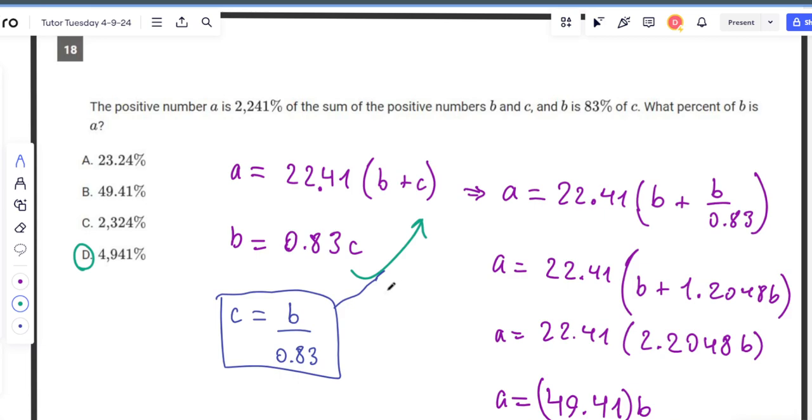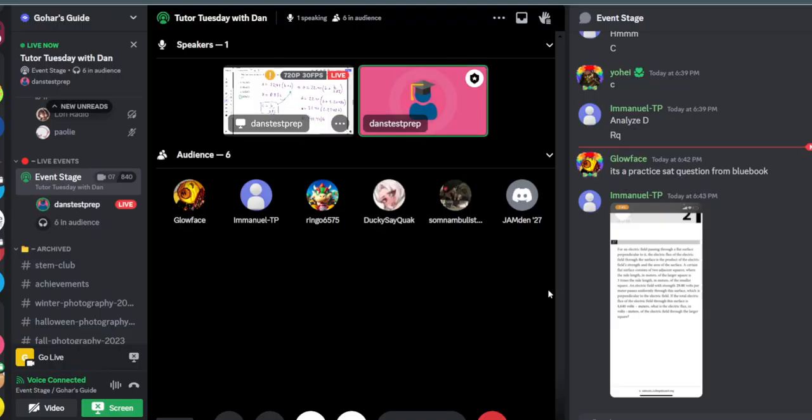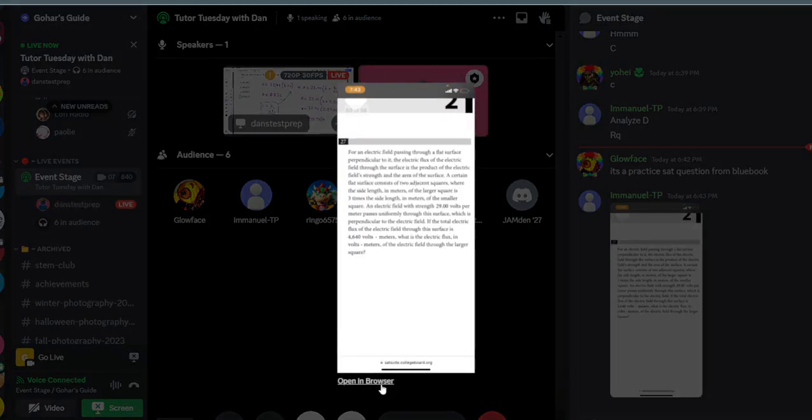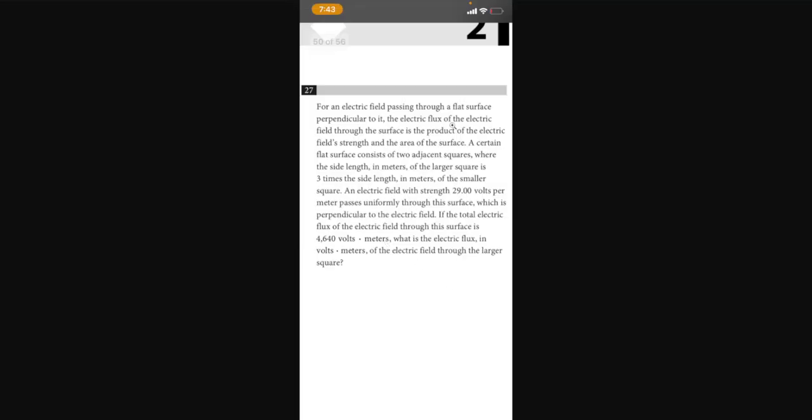So what percent of B is A? That's saying A is what percent of B? And A is 49.41 times B. So I'm going to go with 4,941 percent - B is that much larger than B. Remember to convert from decimal to percent, we multiply by 100 or move the decimal point two places. This is from Blue Book? This is so difficult. I guess it's not that difficult - we laid out all the steps here, but I just haven't seen a question like that compared to other SAT math problems.